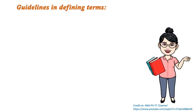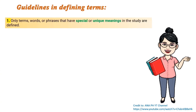Here are some guidelines in defining terms in a research paper. Number one: only terms, words, or phrases that have special or unique meanings in the study are defined. There is no need to include words that are already familiar to the majority of people. For example, there is no need to define the word 'student' because we are already familiar with that term.